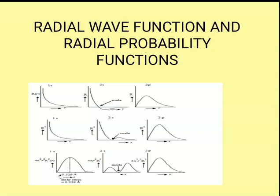In my previous video, I shared with you the Schrödinger wave equation. The solution of the Schrödinger wave equation gives us two things: number one, values of psi, meaning the wave function, and number two, E, meaning energy. Now psi, that is the wave function, can be separated into two parts: radial wave function and angular wave function.